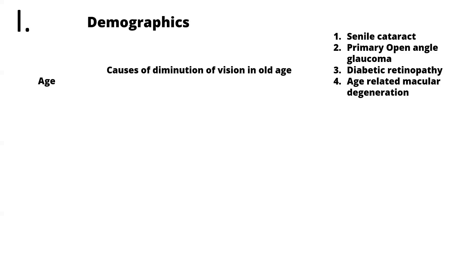The first thing you'll ask about is demographics — the name and age of the patient. Whenever a patient tells you their age, common conditions for that age should be running through your mind. Causes of diminution of vision in old age would probably be senile cataract, primary open angle glaucoma, diabetic retinopathy, and age-related macular degeneration. Apart from these, there are many corneal dystrophies and degenerations, but these are the most common causes.